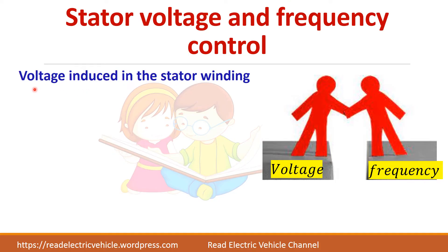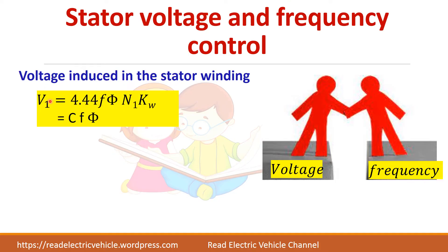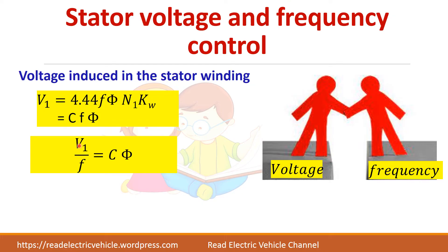The voltage induced in the stator winding is given by the equation where all terms are constant except F and φ. Taking C as the constant term: V1 = C × F × φ. Rearranging, V/F = C × φ. So if we keep this ratio V/F constant, flux will be constant, and if flux is constant, torque will be constant.